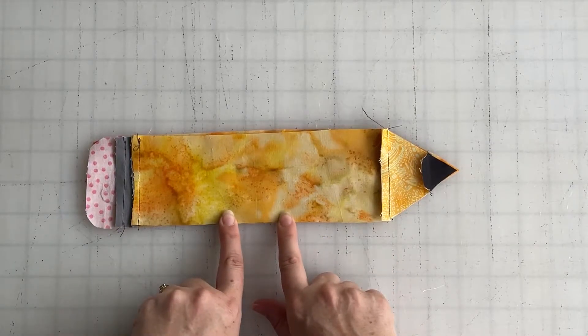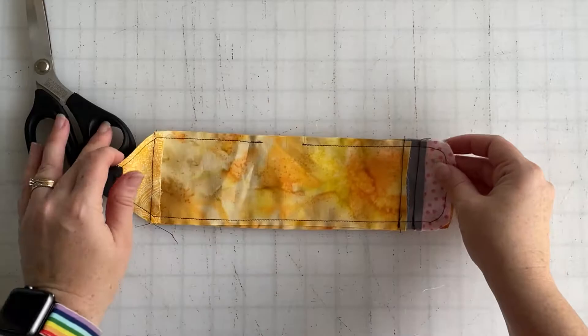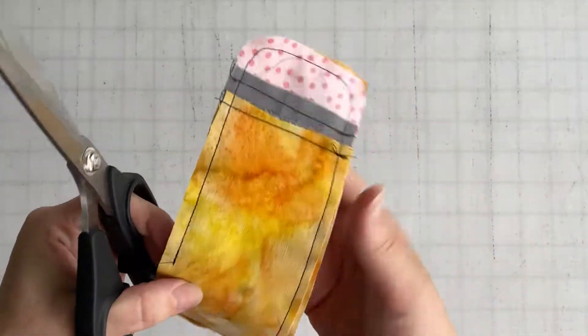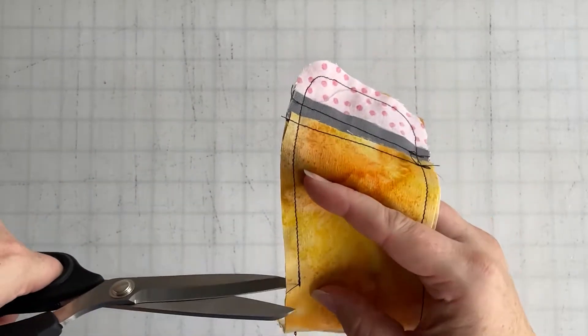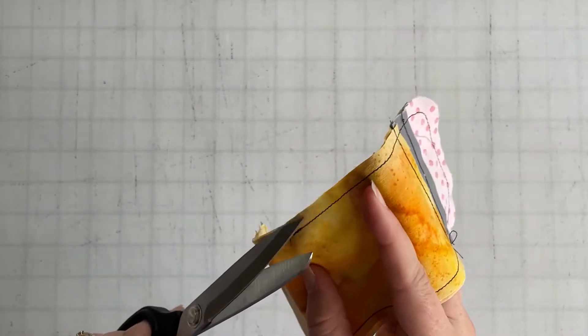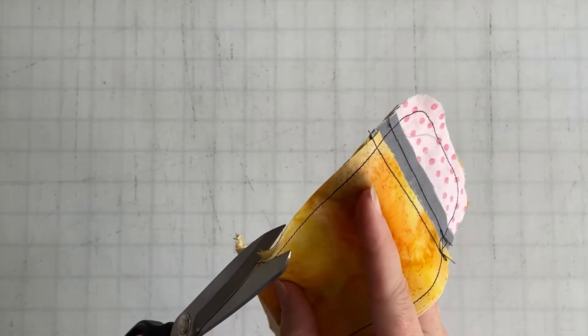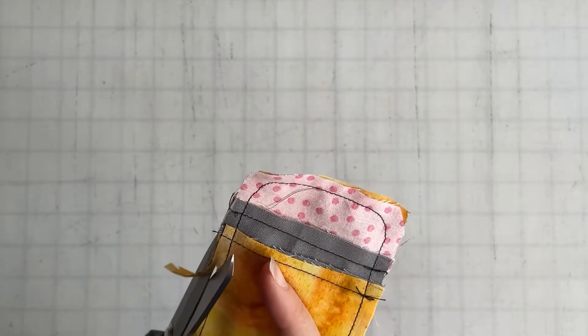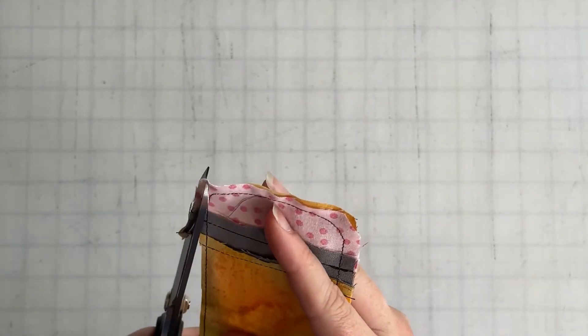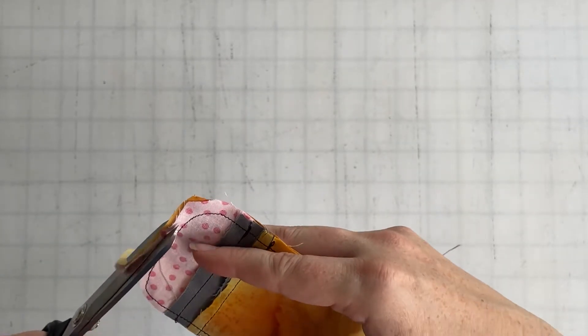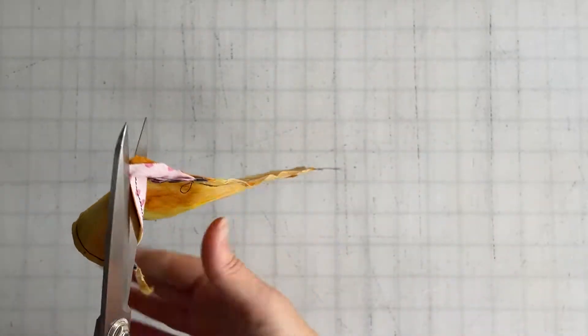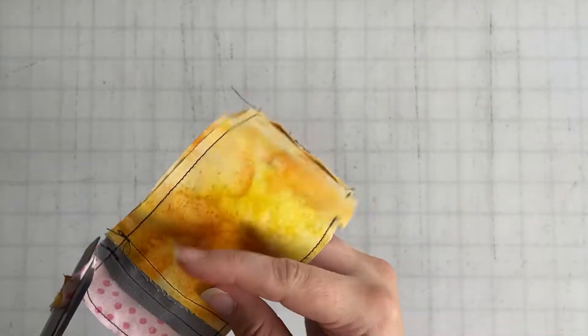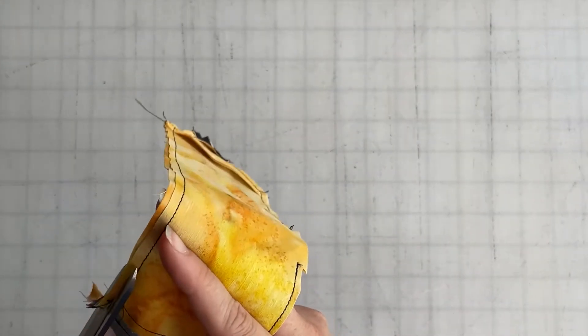We are all sewn along the entire outside and I would highly recommend taking a pair of scissors and trimming back your seam allowance as close as possible without clipping through any of your threads. That way when we turn this puppy right side out, all these little corners and all of these little bits are as smooth and nice as possible.